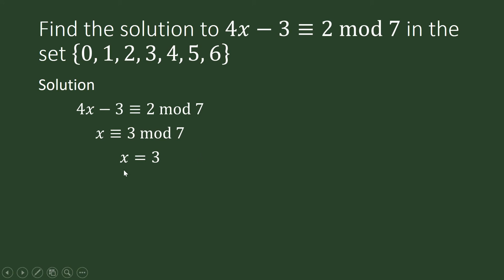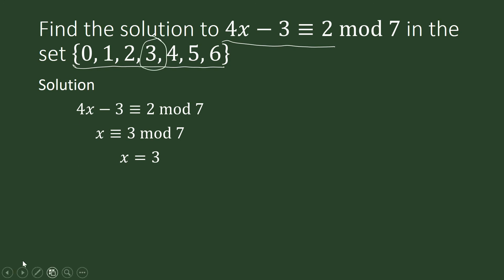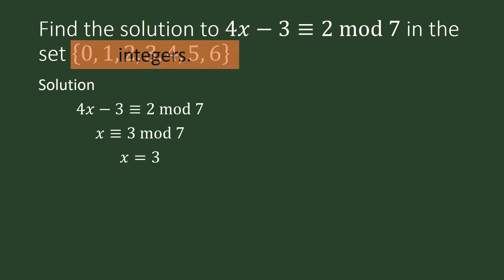We already solved the first problem and found that from among these integers, the solution to the congruence equation is x equals 3. Now we shall remove that restriction and not confine ourselves to that set, but replace it with the entire set of integers. If we look at the entire set of integers, are there other solutions to this congruence equation?